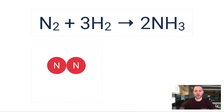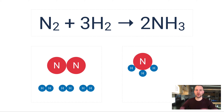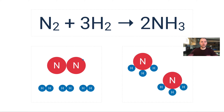N₂ means you have one nitrogen molecule, and each one of those molecules has two nitrogen atoms. The three in front of H₂ means you have three separate and distinct H₂ molecules — one molecule of H₂ would be just one of these, and we've got three of them. On the product side, we're not just making one NH₃ — we're making two of them.